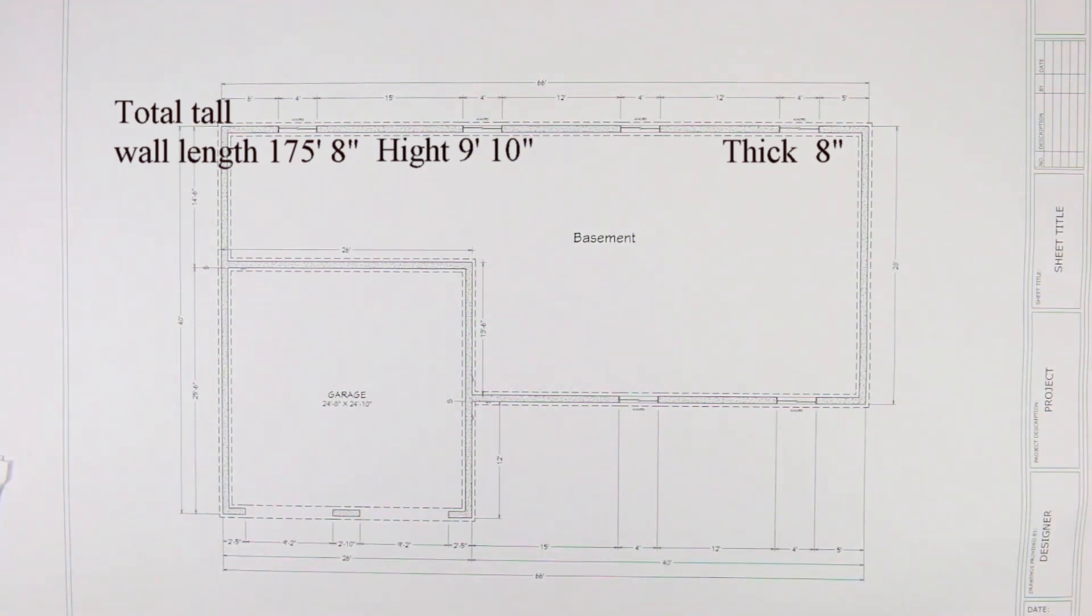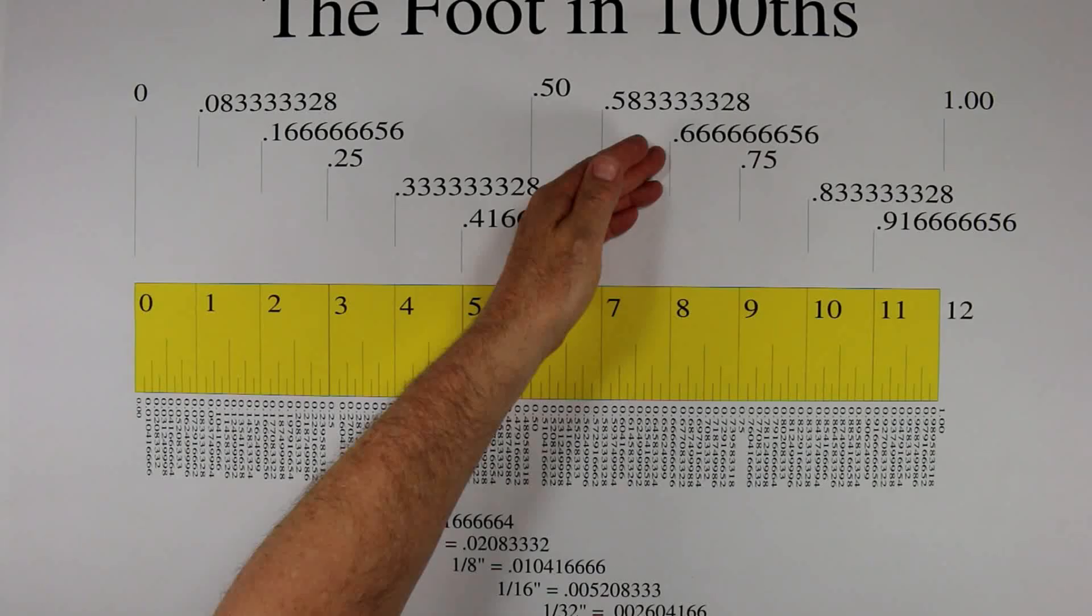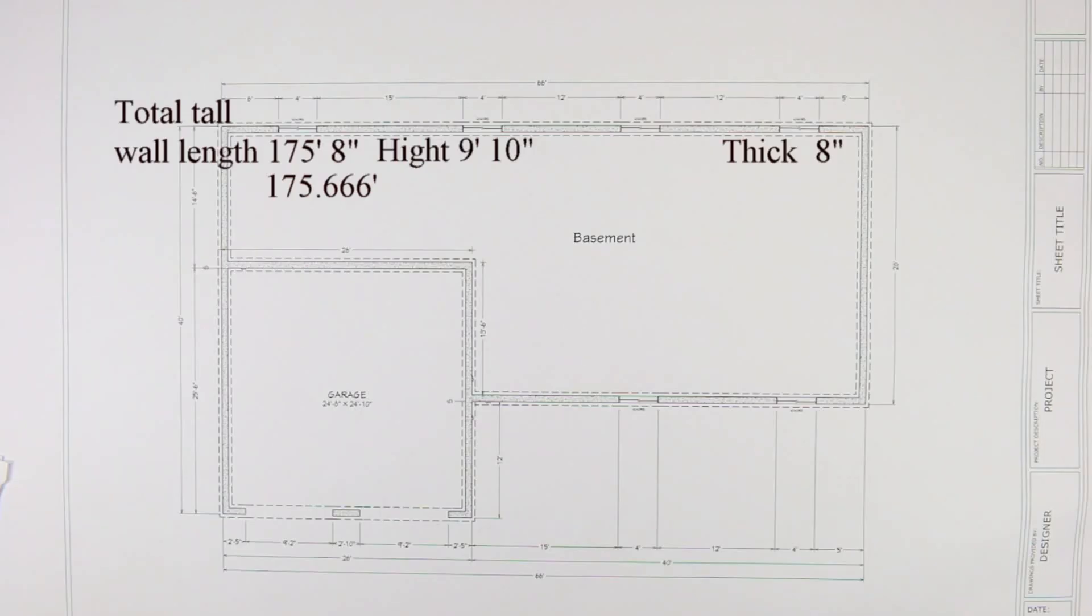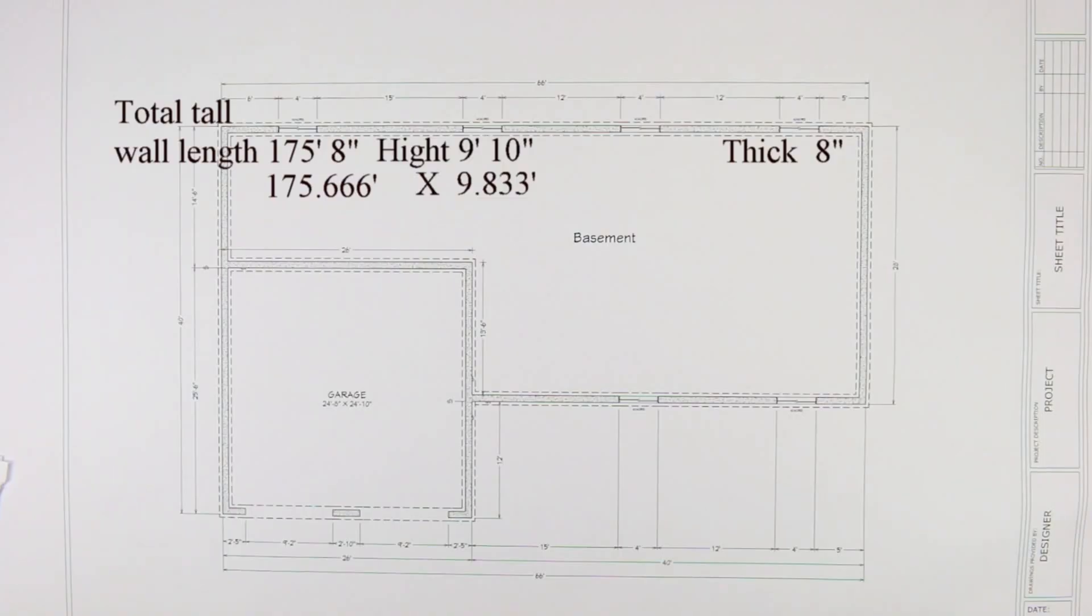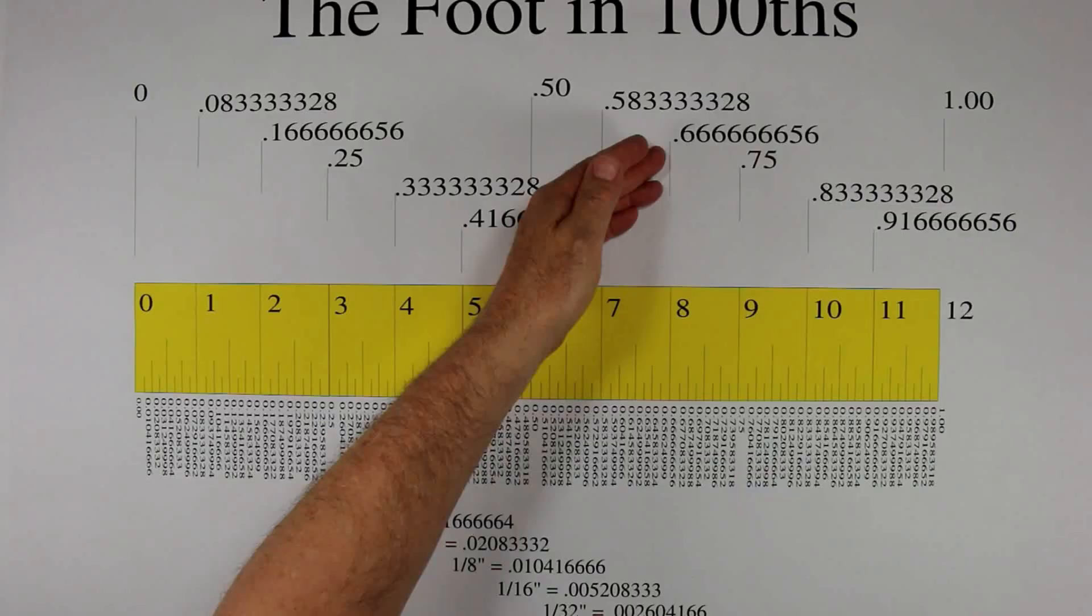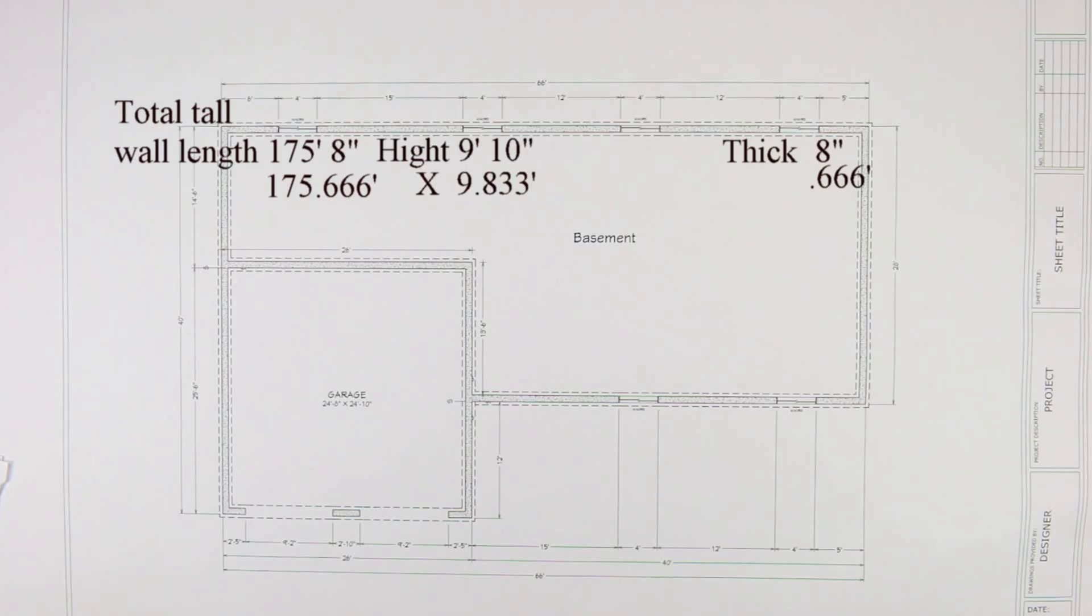To do the math correctly we need to convert the inches into hundredths. So 175 feet 8 inches becomes 175.666 feet. 9 feet 10 inches becomes 9.833 feet. And 8 inches becomes 0.666 feet. So the math equation is 175.666 times 9.833 equals 1727.3237 square feet.